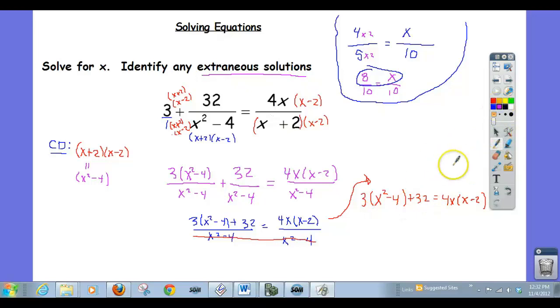And this is a lot easier. This problem is a lot easier. I mean, it looks kind of crazy still, but it's a lot easier now because we don't have any fractions. And I'm going to kind of clean things up. I'm going to do this a little quickly because I think you all should be able to take it from here. This is 3x squared minus 12 plus 32, and that's equal to 4x squared minus 8x.